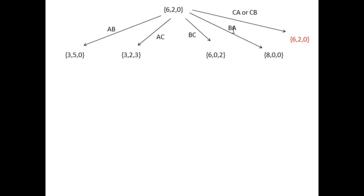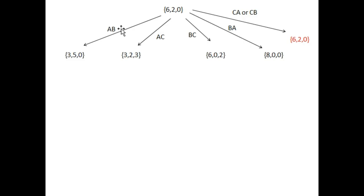For action BA, jug B has 2 liters of water and jug A has capacity 8, so we can add those 2 liters into jug A. The new state will be 8,0,0. The edges represent the actions which we apply on this state.